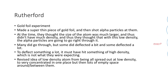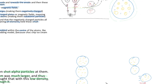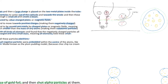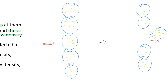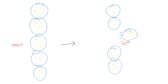Then next was Rutherford, who did the gold foil experiment. He made a super thin piece of gold foil and then shot alpha particles at it. At the time, they thought that the size of the atom was much larger and thus didn't have a very high density — like a beach ball. So with this low density, they thought the alpha particles were going to go right through it, or kind of push them out of the way because of their low density. Imagine the Thomson model like beach balls in a row and you're shooting a bullet at them — the beach ball would simply get pushed out of the way.